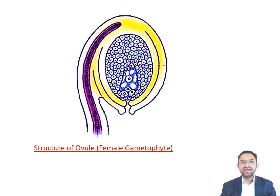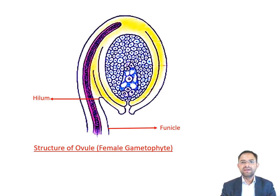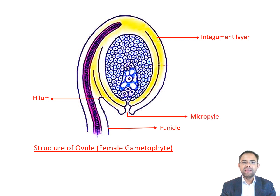The ovule is attached to the placenta by means of a stalk called funicle. The body of the ovule fuses with the funicle in the region called hilum. Each ovule has one or two protective layers called integuments. Integuments encircle the ovule except at the tip where a small opening called the micropyle is present. Opposite to the micropyle end, there is a chalaza, which represents the basal part of the ovule. A mass of cells enclosed within the integuments is called nucellus, and the cells of nucellus have abundant reserve food material.